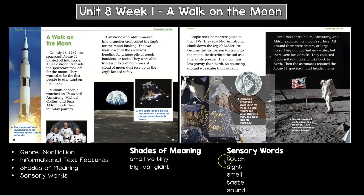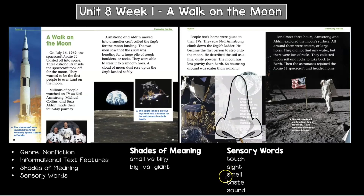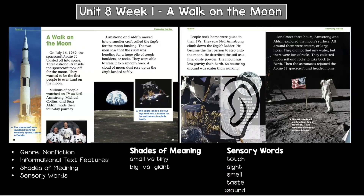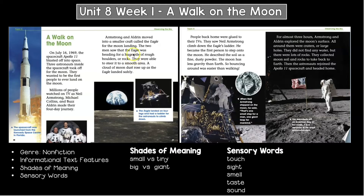Authors also use descriptive language — they use sensory words, or words that appeal to our senses. Our senses are touch, sight, smell, taste, and sound. The author writes that the eagle was heading for a huge pile of rough boulders or rocks. The word 'rough' describes boulders and rocks; 'rough' is a sensory word because it tells me what something feels like — it appeals to our touch sense.